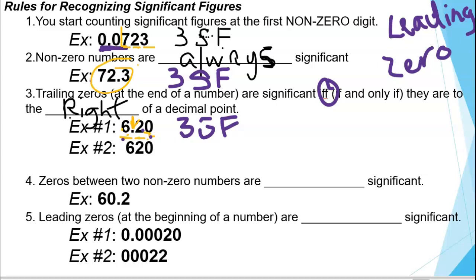Looking at example two, we still start with a 6, which is a non-zero number — one significant figure, two significant figures — and then we have a trailing zero again, but there's no decimal point. So that zero is not significant. Because there's no decimal point, we only have two significant figures in this second number. Trailing zeros at the end of the number are only sometimes significant — you have to look at whether they are after a decimal point or whether there is no decimal point.